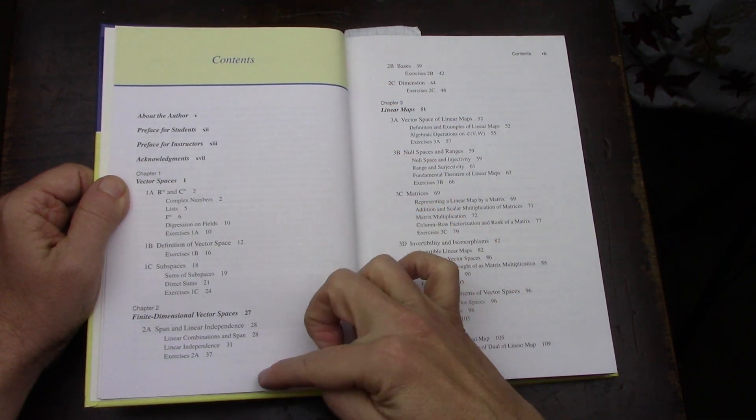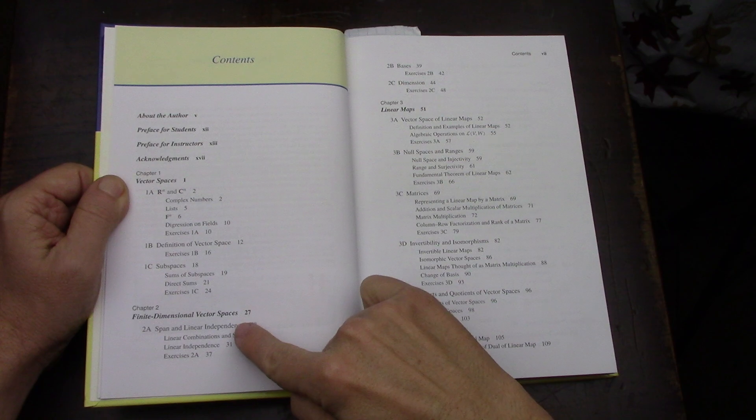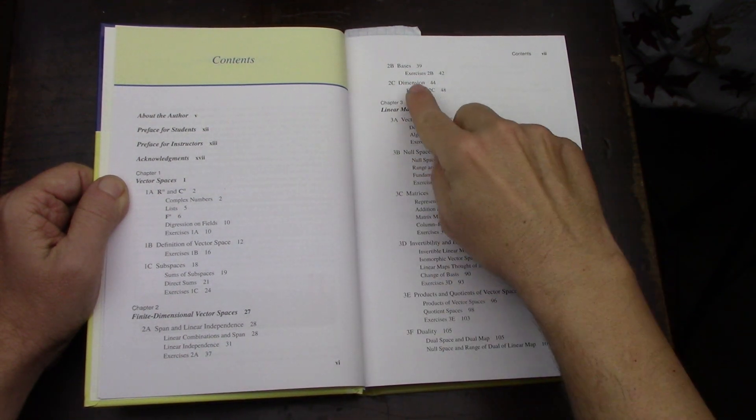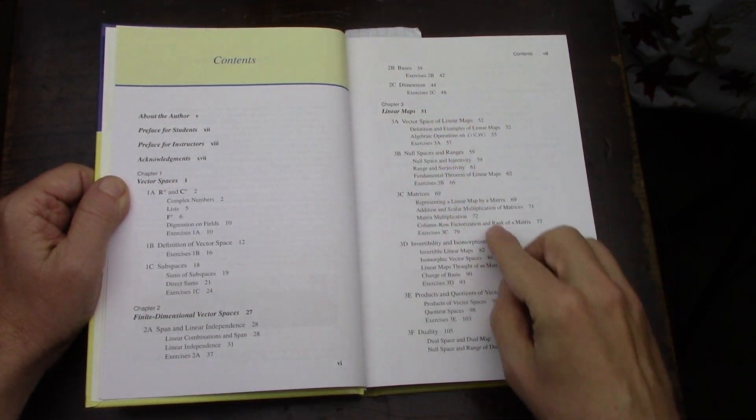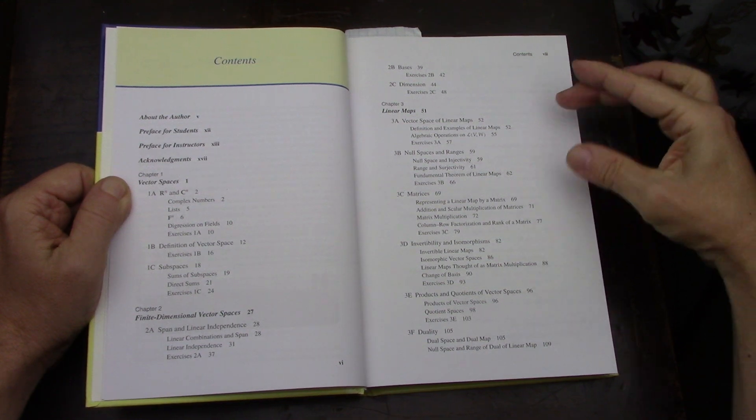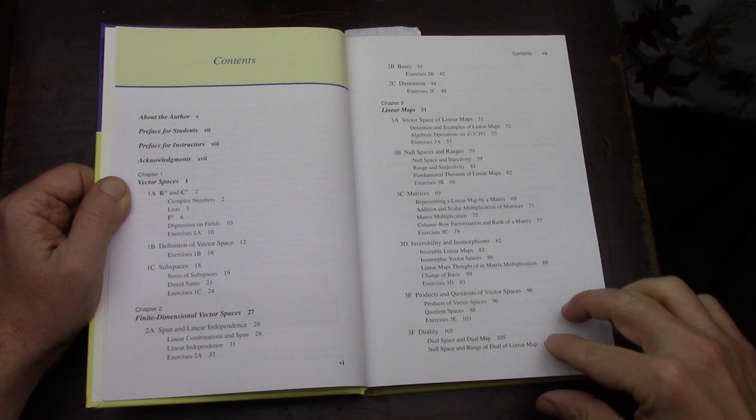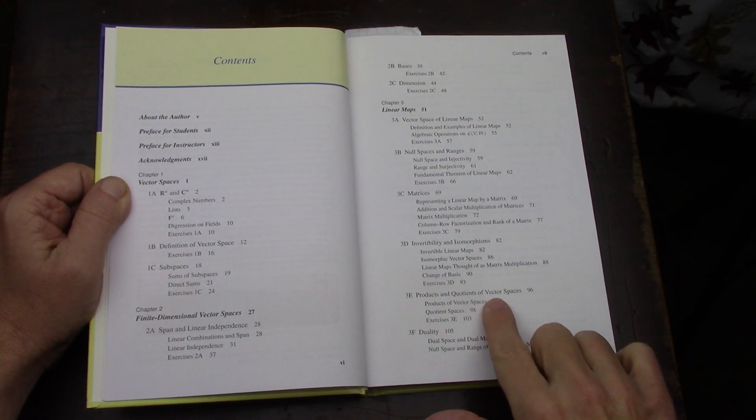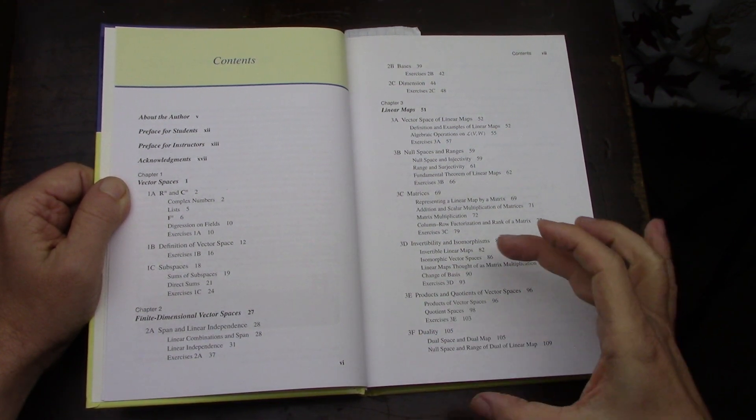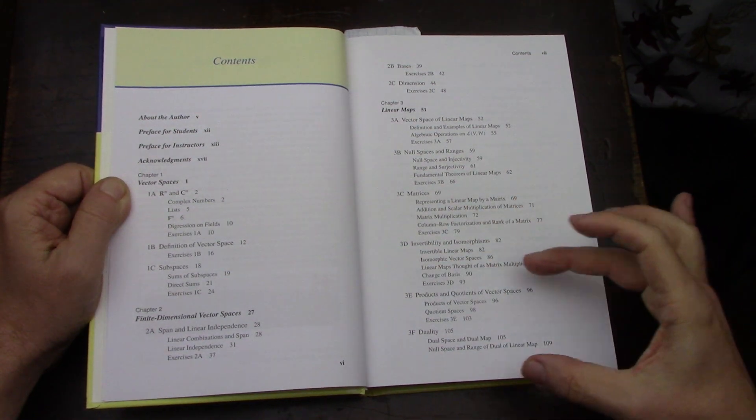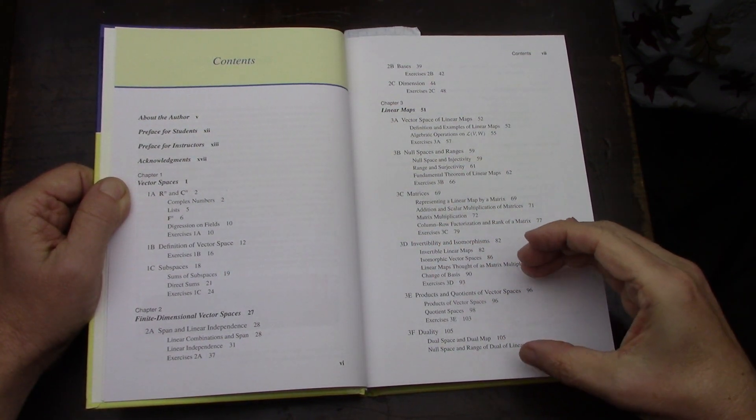It covers finite dimensional vector spaces with span, linear independence, bases, and dimension. Then linear transformations, linear maps, invertibility and isomorphisms, products and quotients of vector spaces, and duality.